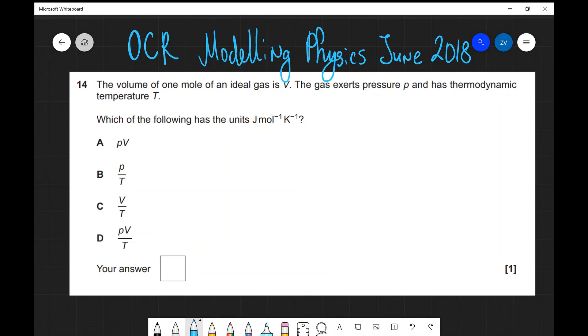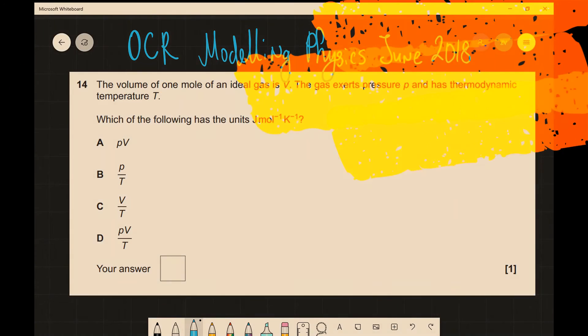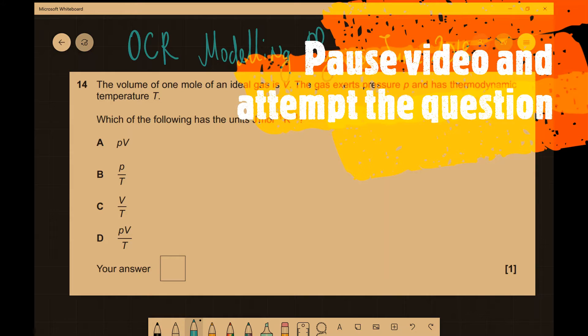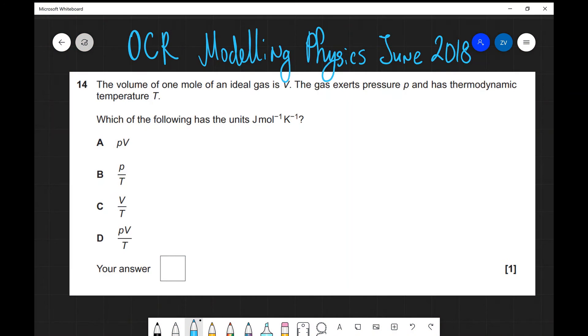Let's see whether we can apply our knowledge to a past paper question. We have a 2018 past paper question from the OCR modeling physics paper. This will be a perfect opportunity for you to pause this video and attempt this example completely independently, because that's the best way to really get a hang of physics. Let's have a look at the solution to this problem.